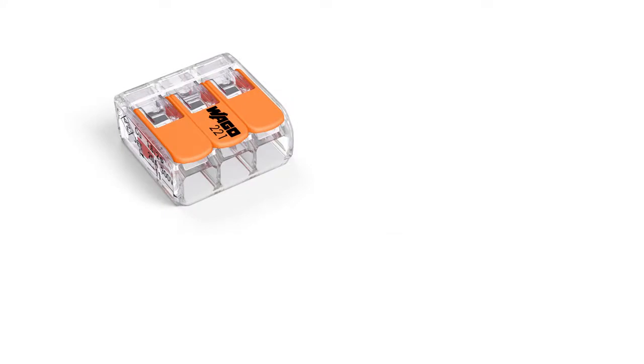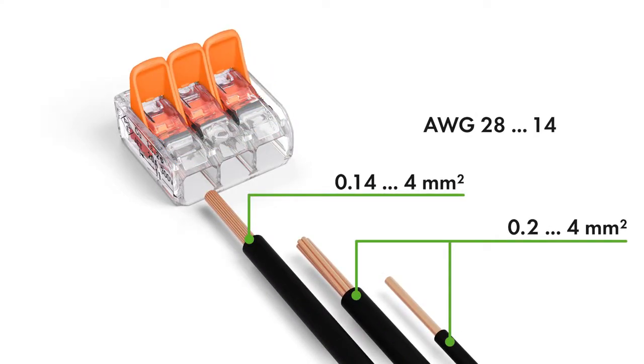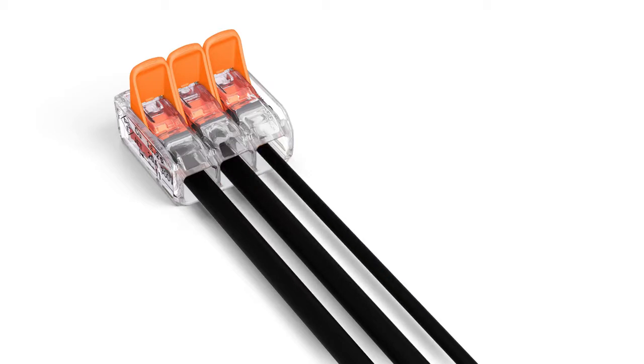The compact splicing connectors for all conductor types feature a large connection range: 0.14 to 4 square millimeters fine-stranded and 0.2 to 4 square millimeters solid and stranded, 28 to 14 AWG. This flexibility permits a wide range of applications, especially when conductors of different types and different sizes are used together.